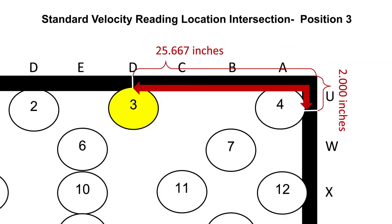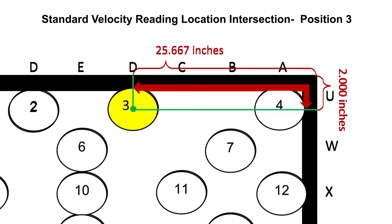Since position 3 is right of the center, it is measured from the right towards the center. Position 3 is at the intersection of D and U. A measurement and marking for D is 25.667 inches from the right toward the center horizontally, and for U, 2 inches from the top towards the bottom. Therefore, the position 3 standard velocity reading location is at the intersection of D, 25.667 inches from the right to center, and U, 2 inches from top to bottom.